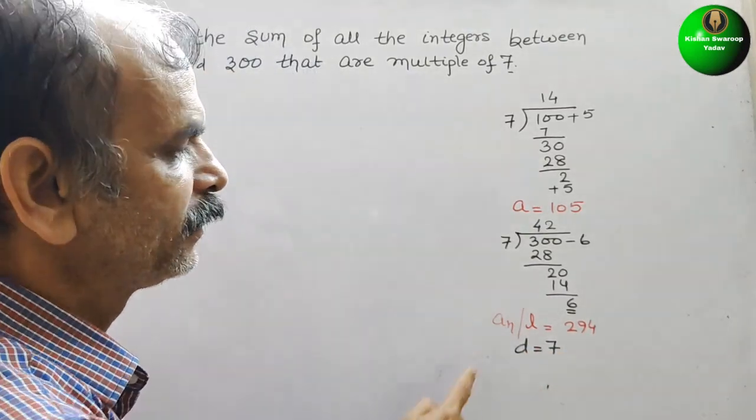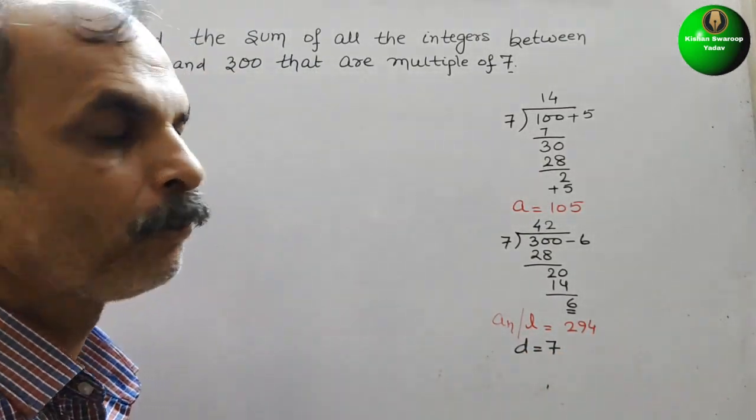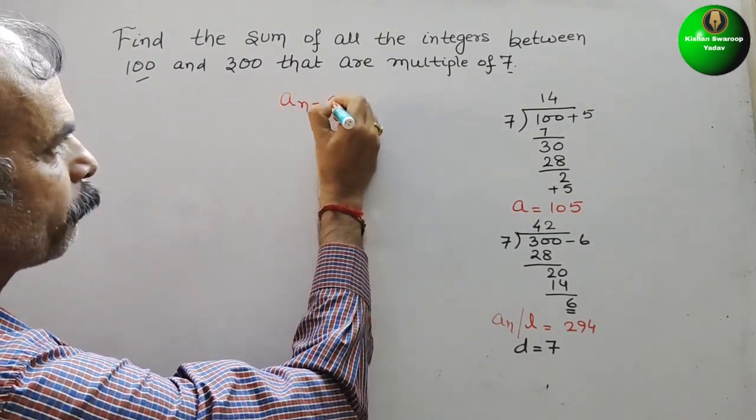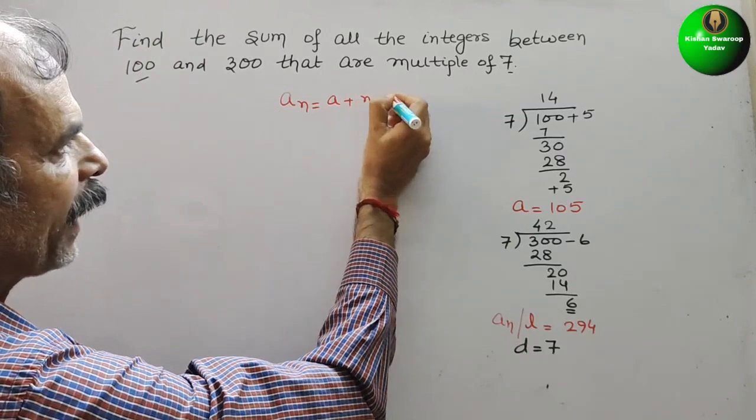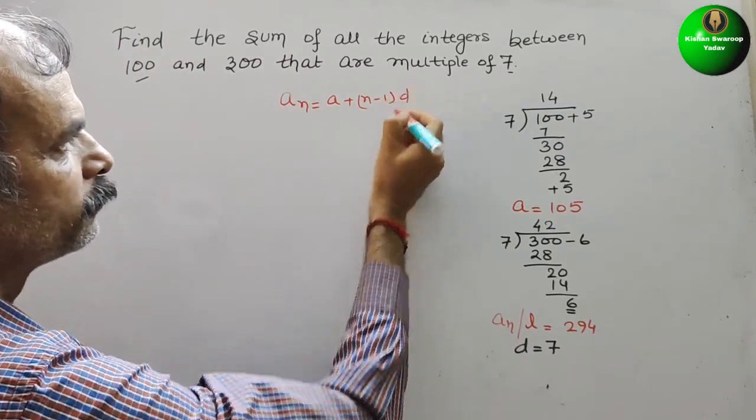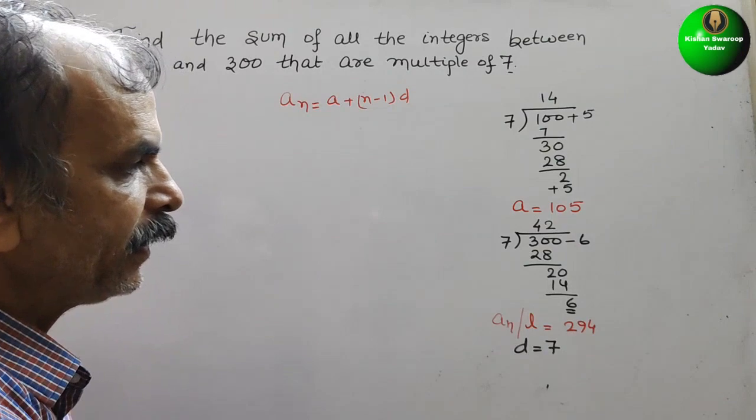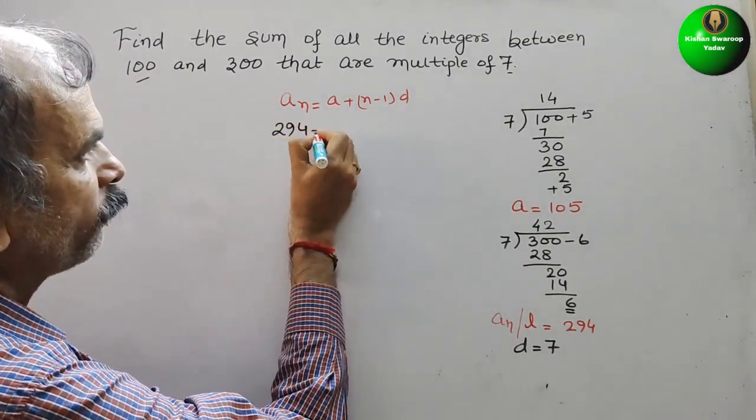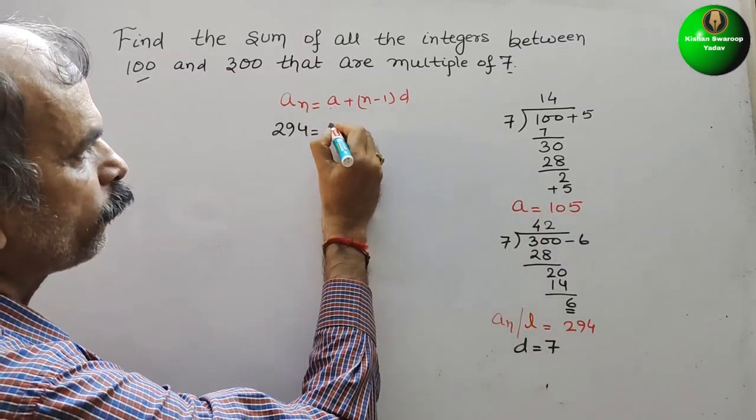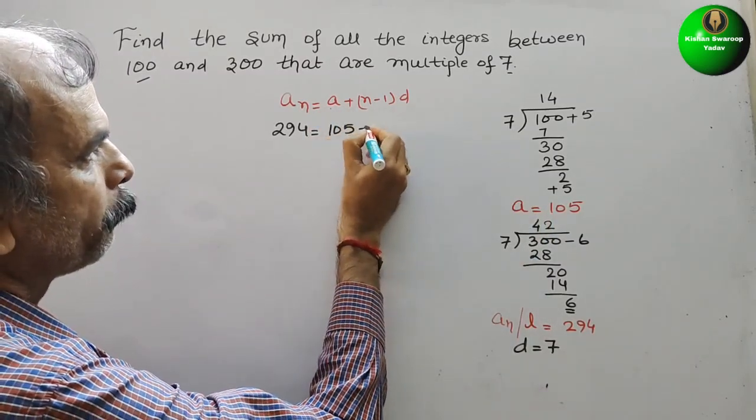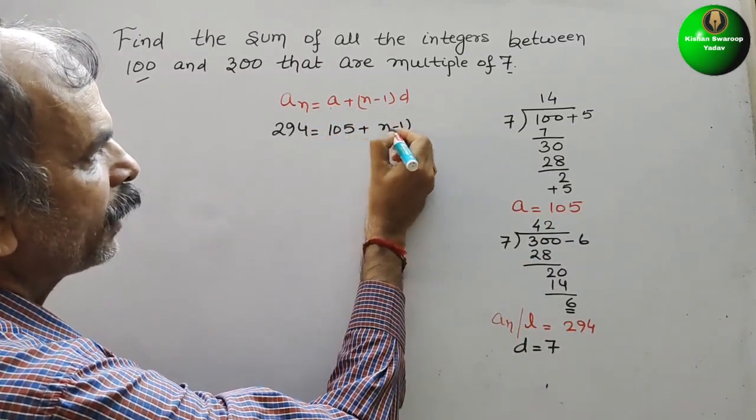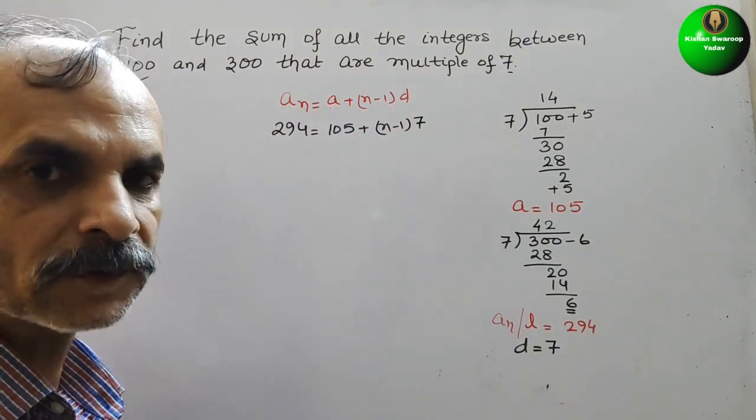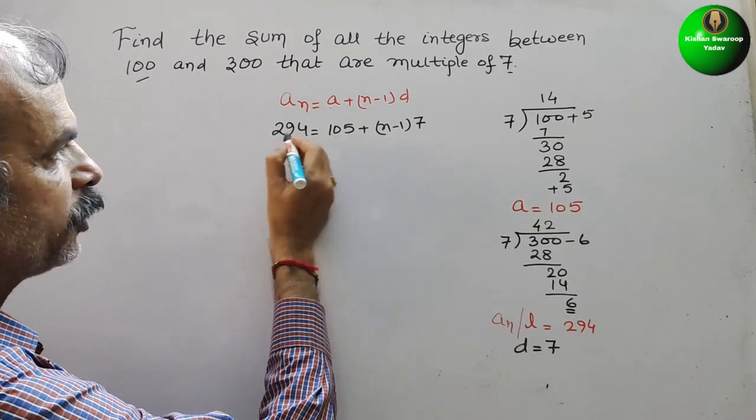Now we will write AN formula. AN formula is AN is equal to A plus N minus 1 into D. Now, AN is 294 is equal to A is 105 plus N minus 1 and D is 7. Now, solve this. Bring this to this side.